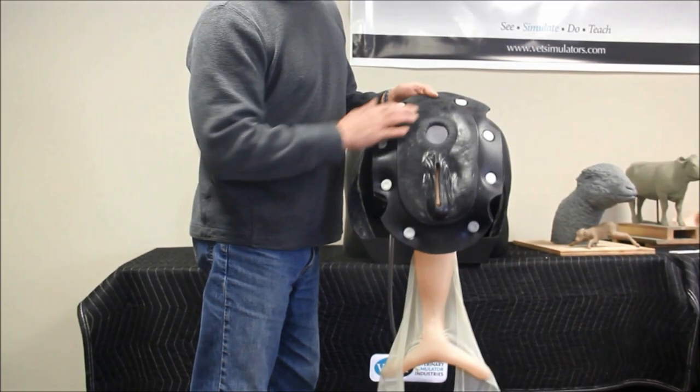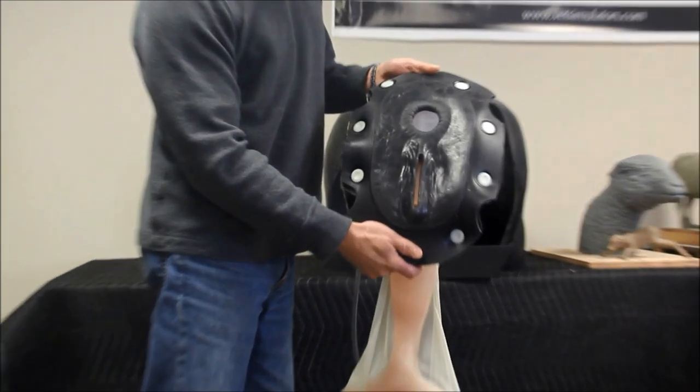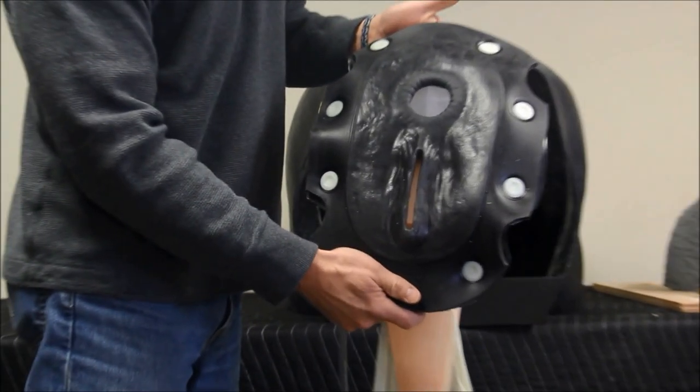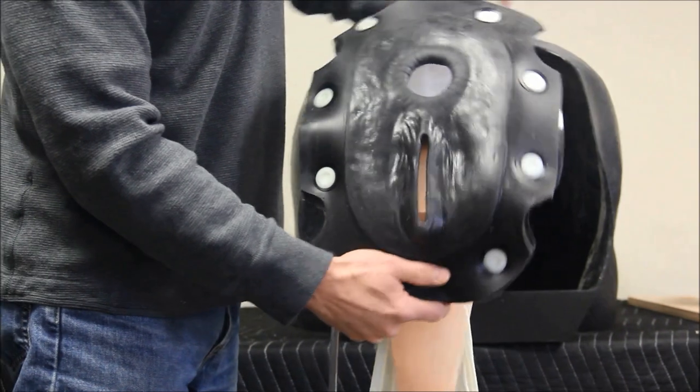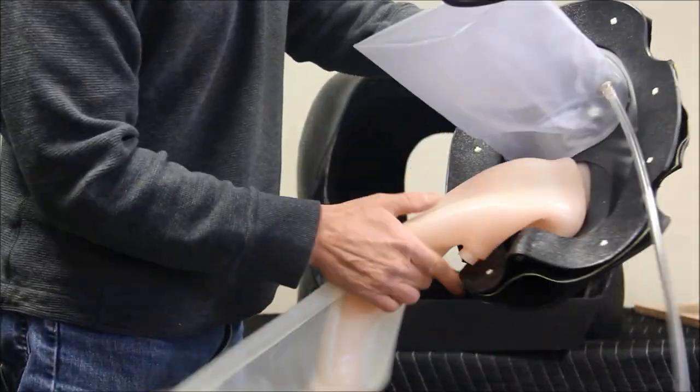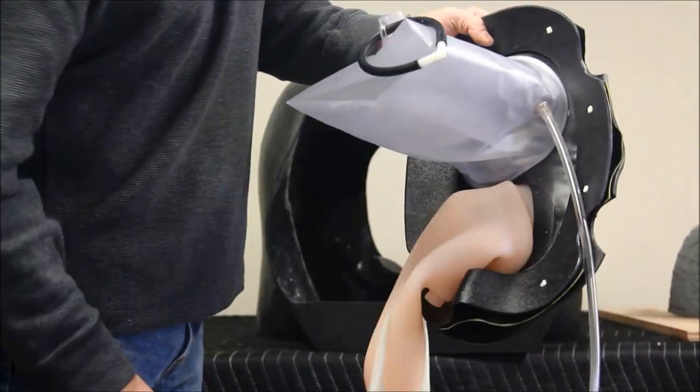This is the equine palpation assembly, which is a replaceable part. It features a soft perineum panel with anal and vulva openings, mounted to an ABS plastic ring via plastic fasteners.